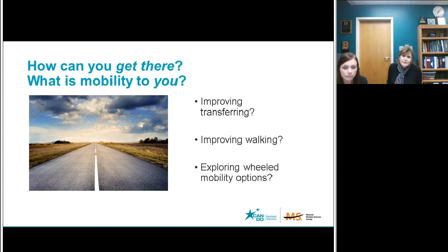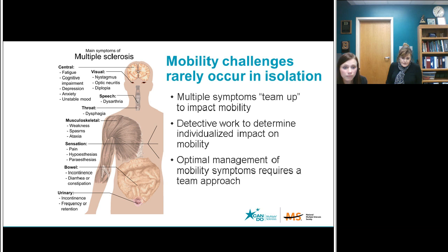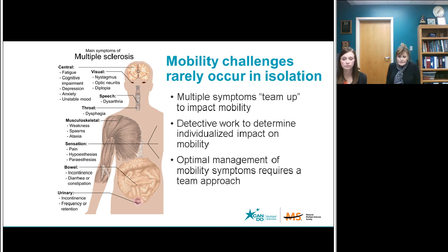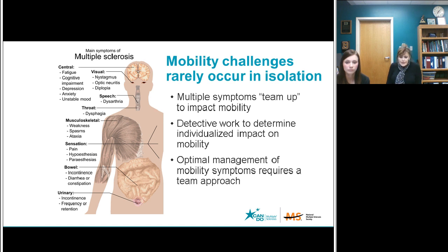How can you get where you want to go when MS symptoms interfere? Mobility challenges are complicated and rarely occur in isolation. MS is complicated. Just like a fingerprint, MS mobility issues are unique to each individual. Generally, mobility problems can be an interplay between muscle weakness, sensory disturbance, and balance problems. Importantly, other influences on mobility challenges can be your vision, your mood, your energy level, and even your bowel and bladder.